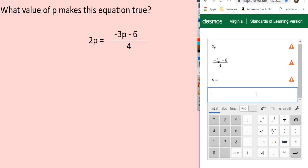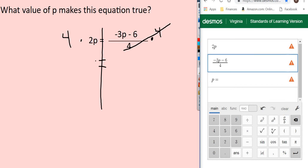I'm going to come back over here and try to solve this equation. First thing I have to do is clear through that fraction, so I know that to do that I have to multiply each side by 4 because these fours will cancel out and negative 3p minus 6 will come here. 4 times 2p is 8p.